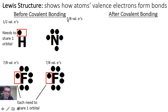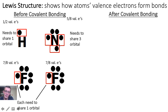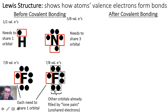Nitrogen meanwhile has five out of eight valence electrons in its valence shell, and so it's going to have to share three orbitals to become stable. Now of note, with fluorine and with nitrogen, their other orbitals are already filled by lone pairs — electrons that they're not having to share.